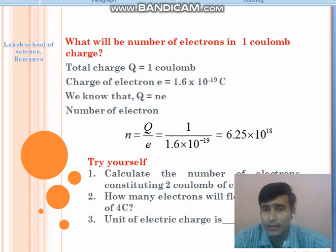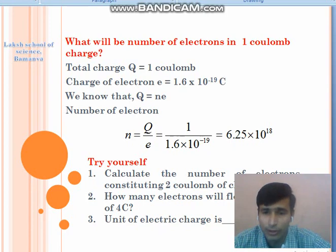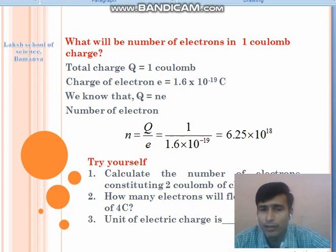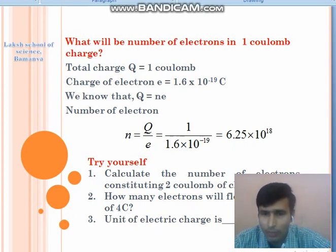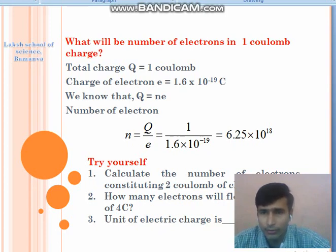In 1 coulomb of charge there are 6.25 × 10¹⁸ electrons. Similarly, you can try some related questions — calculate the number of electrons constituting a 2 coulomb charge, or how many electrons flow in a charge of 4 coulomb, and what is the unit of electric charge. Try these questions yourself.